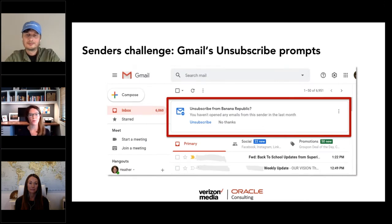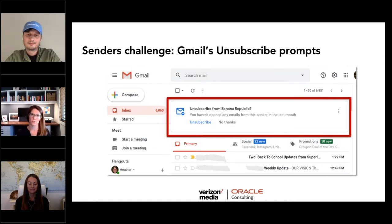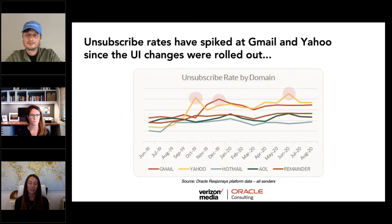Using list-unsubscribe functionality and giving consumers yet another option to unsubscribe is becoming a challenge for marketers. The next slide shows how Gmail handles this: while in the primary tab, a huge prompt appeared from Banana Republic — 'You haven't opened emails from this sender in the last month. Unsubscribe or No Thanks.' It's pretty brazen use of real estate to ask if I want to unsubscribe — ironically Banana Republic is one of my favorite brands.